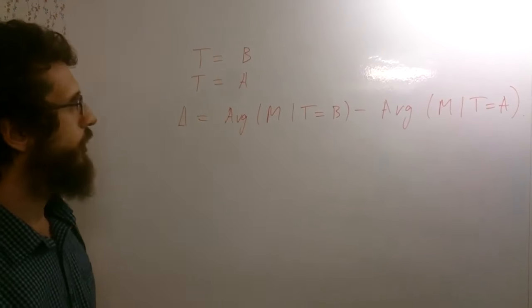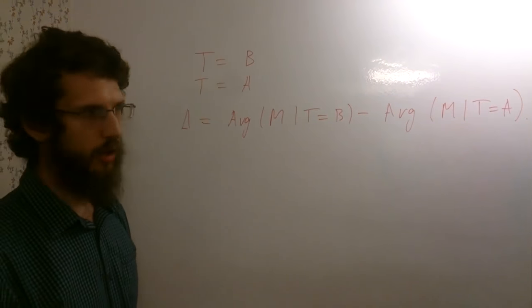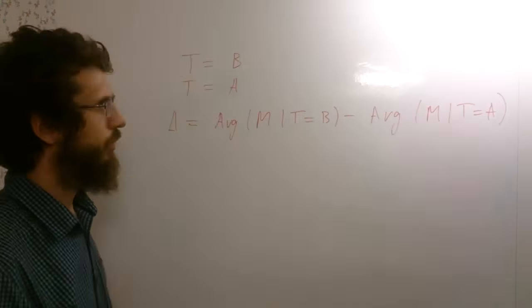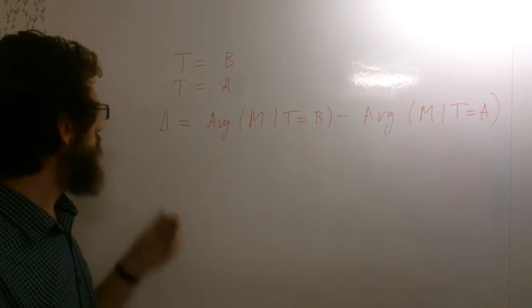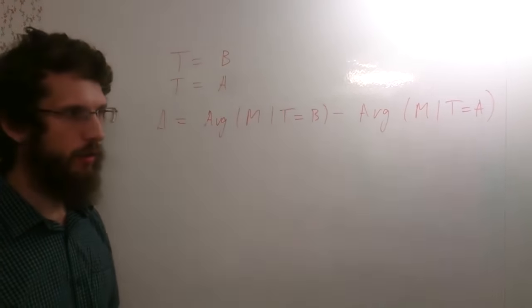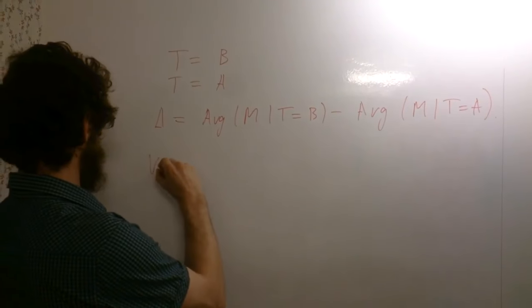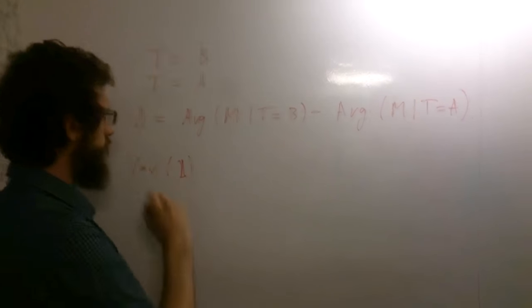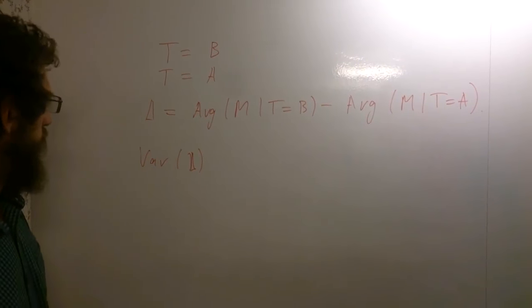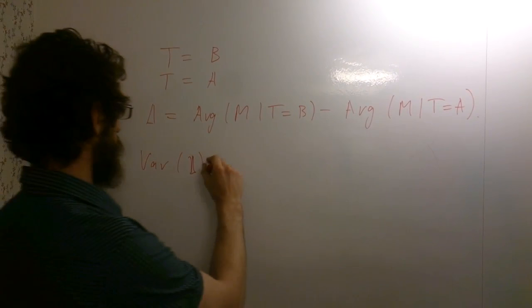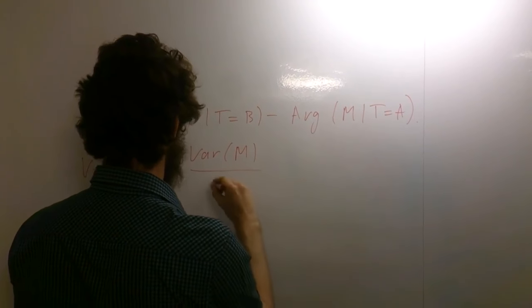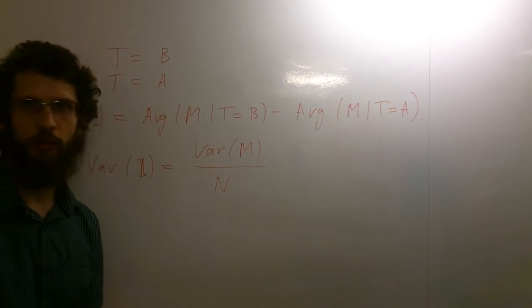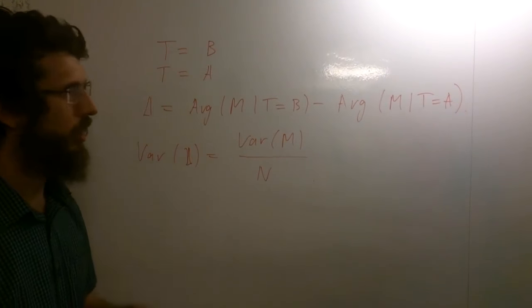When you take this difference and you would like to know whether it is positive or negative, you see that this difference has a large variance, which reduces the significance of this difference. In fact, the variance of this difference is the variance of measure M divided by the number of users, the number of observations in our A/B experiment.